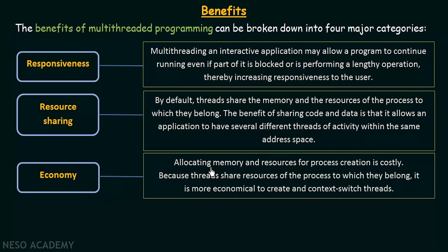The next benefit is economy. Allocating memory and resources for process creation is costly. Because threads share the resources of the process to which they belong, it is more economical to create and context switch threads. Without multi-threading, we would need a separate process for each task, requiring dedicated resources and memory. But since threads share resources, we don't need dedicated allocations, making thread creation and switching more economical.